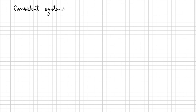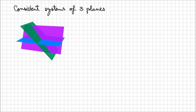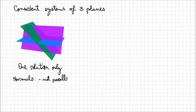Moving on, let's analyze systems of three planes. First, I'm going to consider all possible situations in which three planes are actually having at least one solution — we call those consistent systems of three planes. In this first instance, you see how the planes are intersecting in pairs, but looking at the relation between all three planes, they only intersect in one single point — this red point. So there is only one solution to the system determined by the equations of these three planes. In this case, the normals are not parallel and also aren't coplanar — they aren't in the same plane.